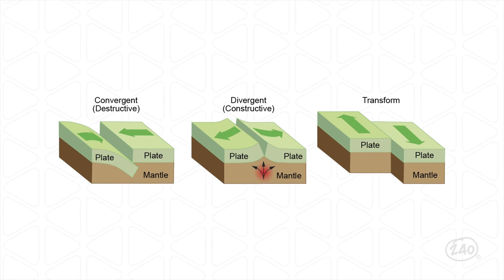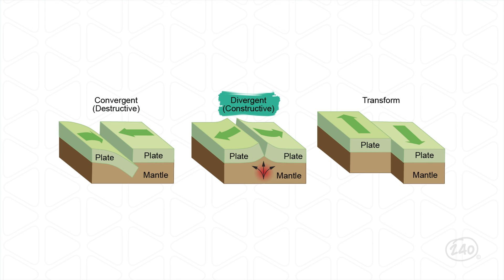Let's use tectonic plates as an example. Tectonic plates are always interacting with the edges of adjacent tectonic plates. At these boundaries, there are three possible movements: constructive, destructive, and neither. At a convergent boundary, two plates move toward each other; as they come together, some of the crust is forced back into the mantle — this is a destructive boundary. At a divergent boundary, two pieces of crust move away from one another; molten rock upwells from the mantle and cools to form new crust — this is a constructive boundary. At a transform boundary, two plates slide past one another in opposite directions and the Earth around the boundary is crumpled. A transform boundary neither adds nor removes crust, so it is neither constructive nor destructive.